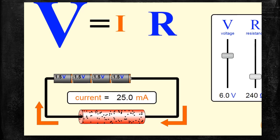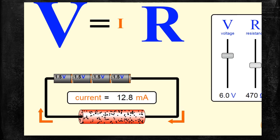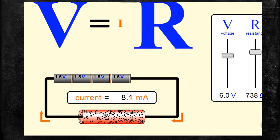Now I am going to increase the R value further from the previous value to 368 Ohm. The current is decreased, and the I symbol is also looking very small. Now the resistance of the conductor is 764 Ohm, and the current is decreased to 7.9 milliampere. This shows that when the resistance of the conductor is increased, current flow decreases. In a high resistance path, the current flow will be very less.